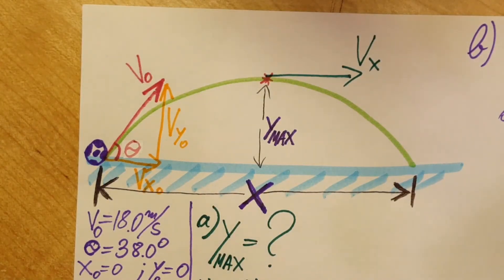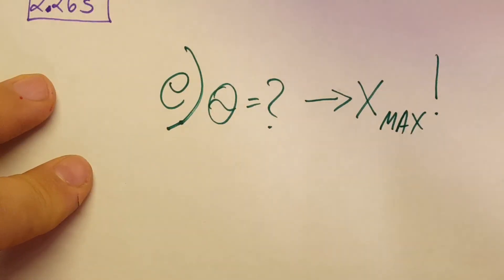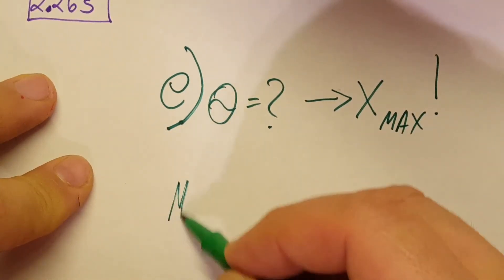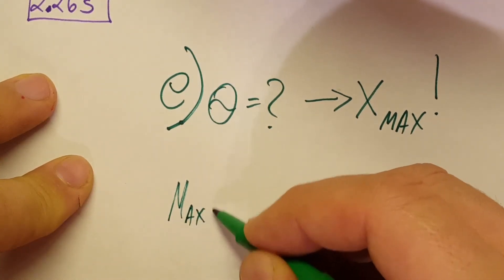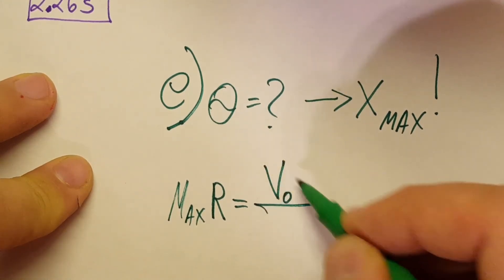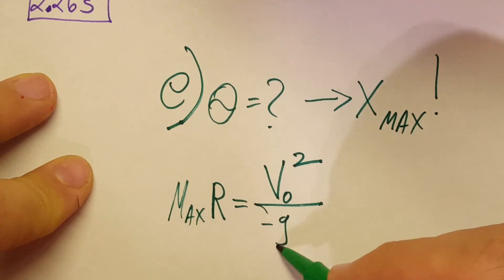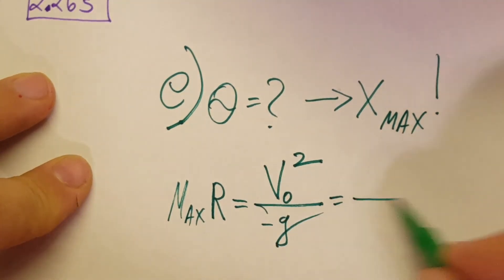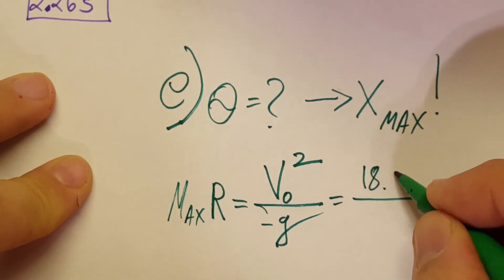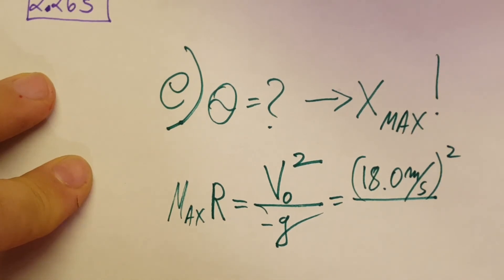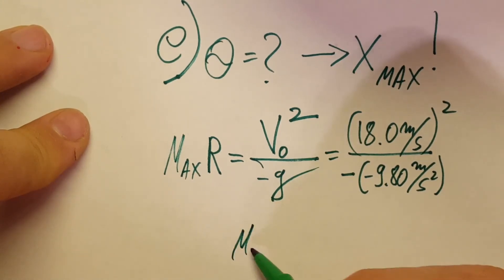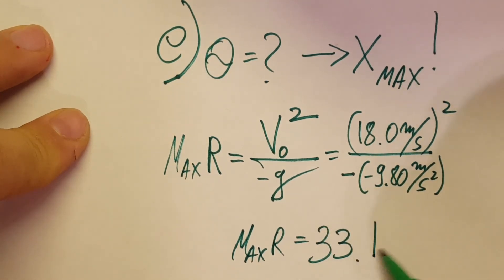In our final part, they are asking us to find a theta which will give us the maximum range. Now for this one we have a cute little formula which says max range, let's call it max r, equals v_naught² divided by -g. We can go ahead and plug in: our initial velocity was 18.0 meters per second, we square it, divided by -9.8 meters per second squared. And we're gonna go ahead and, max range with the calculator, we're gonna find that that range is 33.1 meters.